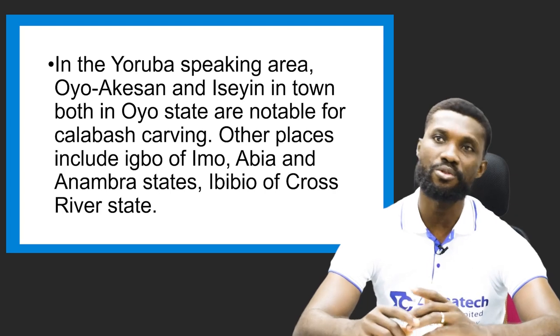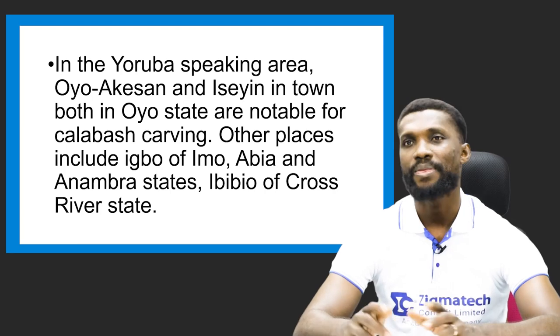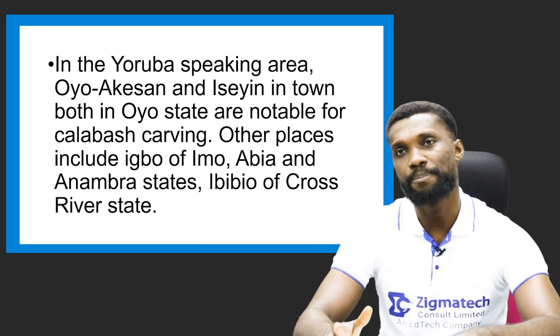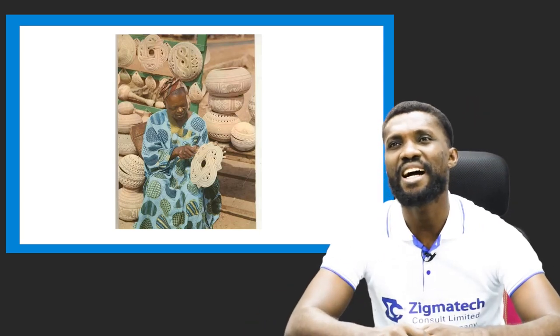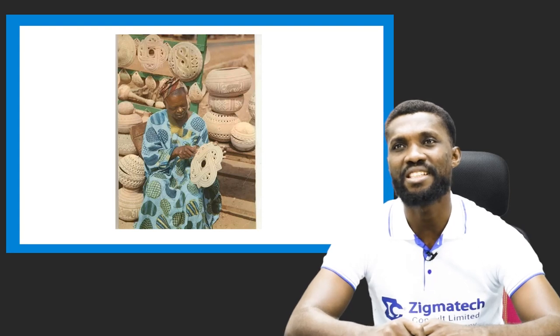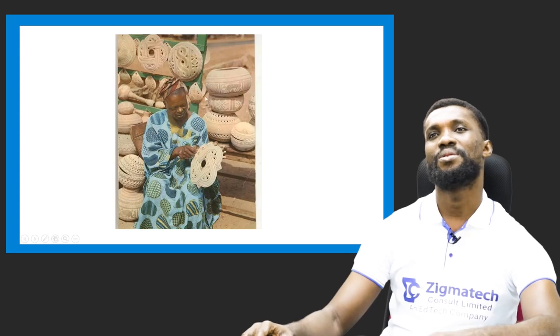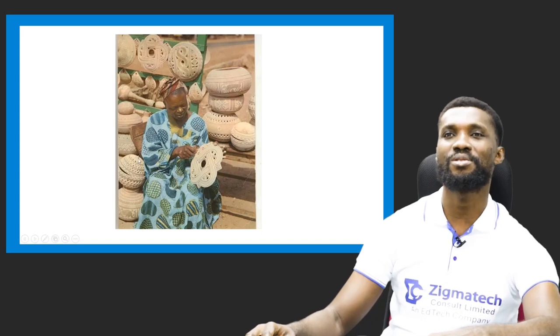Other places include the Igbo of Imo State, Anambra State, and the Ibibio of Cross River State. These places also grow and use calabash products. Here is a lady making an intricate design on the calabash — see how interesting and beautiful that carving is, how skillful and sharp those lines are.